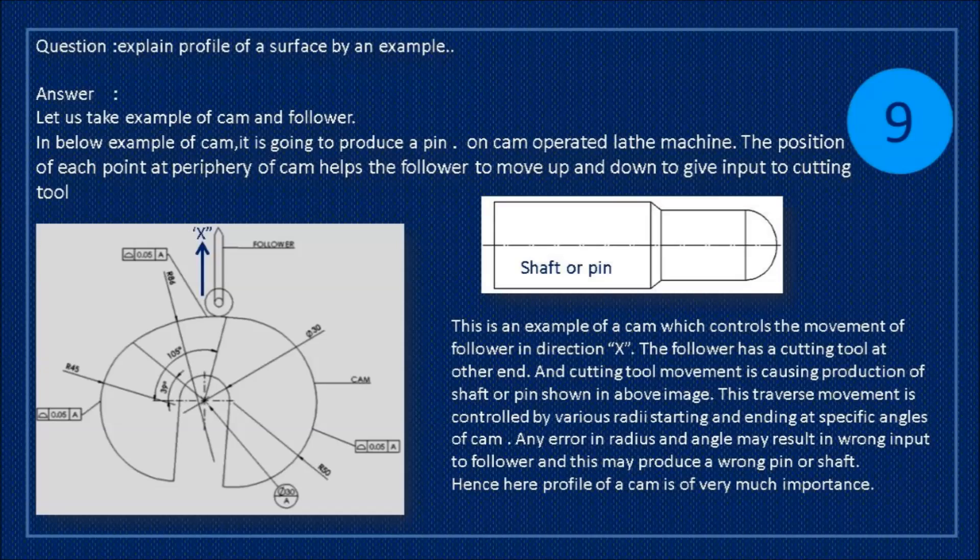This is an example of a cam which controls the movement of follower in direction X. The follower has a cutting tool at other end. And cutting tool movement is causing production of shaft or pin shown in above image. This traverse movement is controlled by various radii starting and ending at specific angles of cam. Any error in radius and angle may result in wrong input to follower and this may produce a wrong pin or shaft. Hence here profile of a cam is of very much importance.